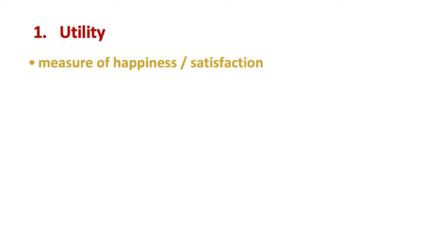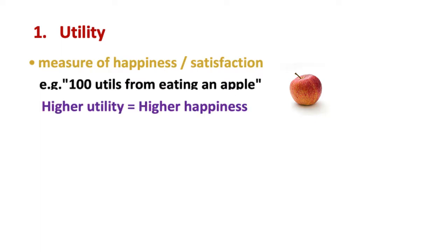Utility is measured in arbitrary units called utils. For example, maybe you get 100 utils from eating an apple. The number 100 itself in this example isn't important. Maybe it's 60. But the point is, the higher the utility value, the higher the happiness or satisfaction.